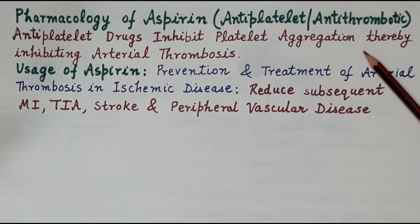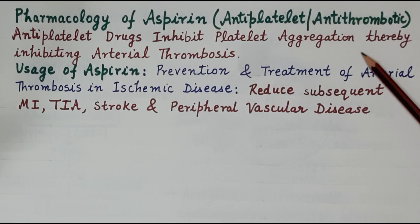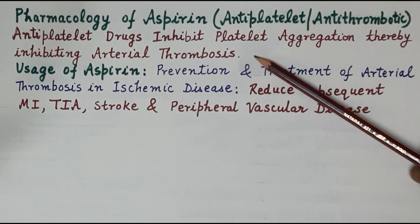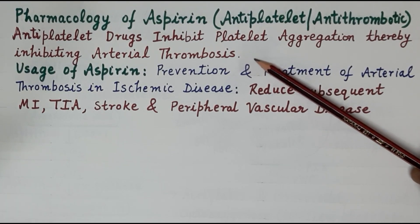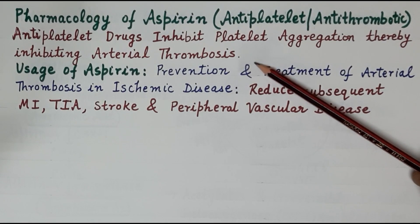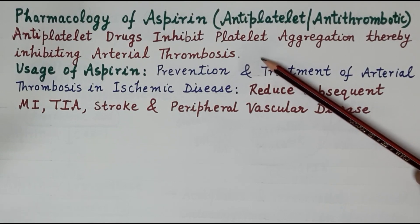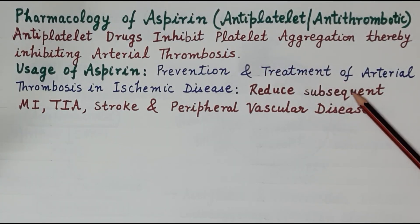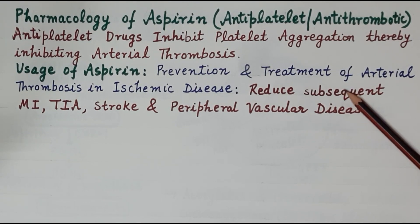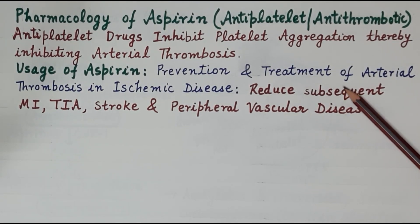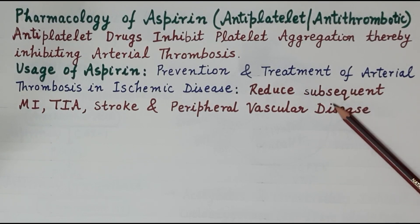Antiplatelet drugs — here specifically aspirin — inhibit platelet aggregation and thereby inhibit the process of thrombosis, specifically arterial thrombosis, because in arteries platelets are the main constituents of arterial thrombosis. Aspirin is specifically useful in the prevention and treatment of arterial thrombosis and ischemic diseases.